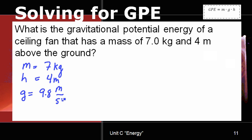which is an acceleration. Since we're looking for gravitational potential energy, the equation is GPE, for gravitational potential energy, equals the mass times the gravity times the height. We plug our numbers in.